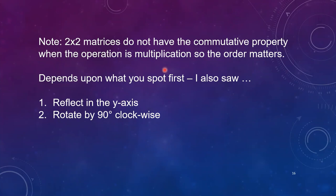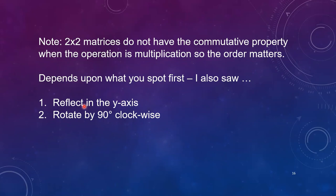Now as a reminder 2x2 matrices do not have the commutative property when the operation is multiplication, so the order does matter. And it's a little bit like those magic eye problems depending on what you see first.